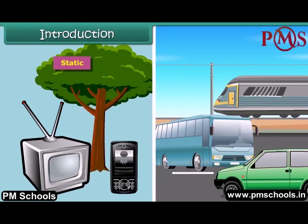In other words, their position does not change with time. Such objects are said to be at rest, whereas objects such as cars, buses, trains etc. are non-static. It means that their position changes with time. Such objects are said to be in motion. Let us discuss motion and time in greater detail in this lesson.